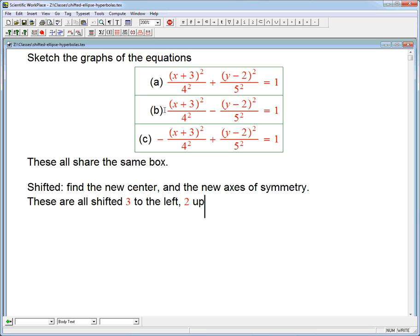And again, that seems backwards. But we're going to be able to check that pretty soon. So the new center, the new center is at minus three, comma two. And the new axes of symmetry are going to be x equals minus three, and y equals two.